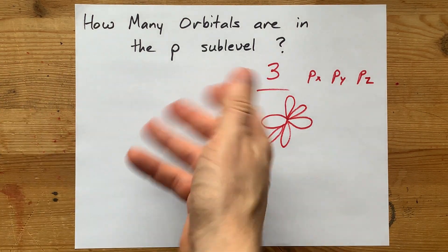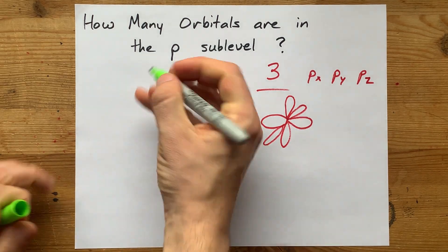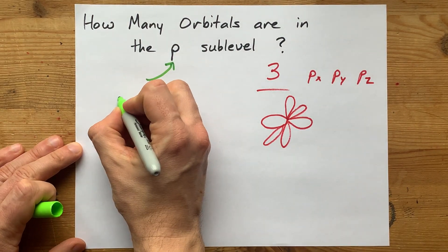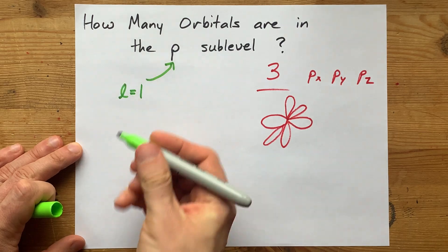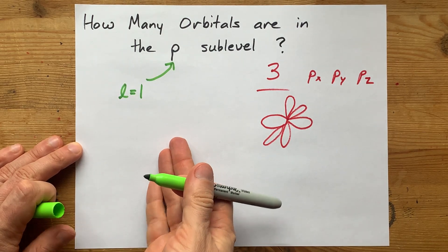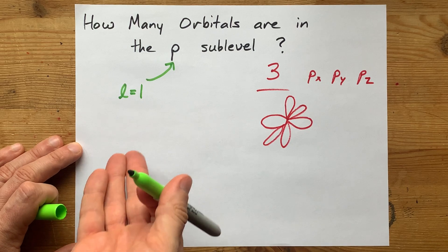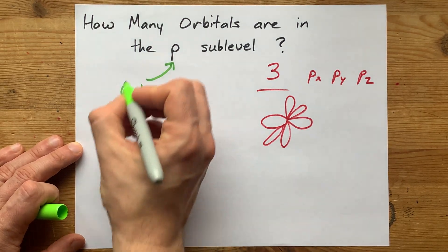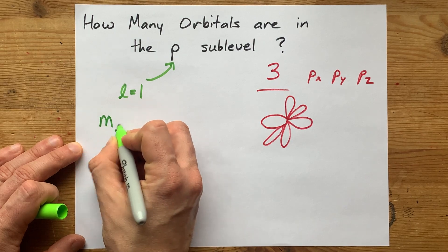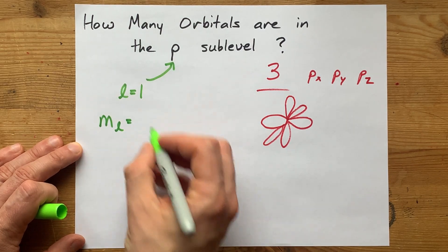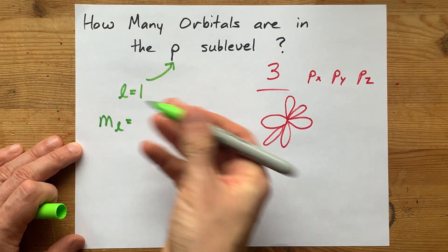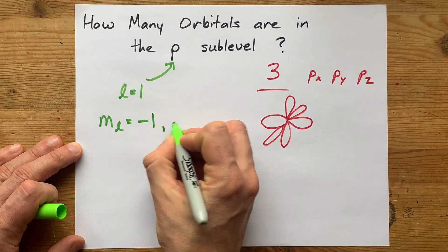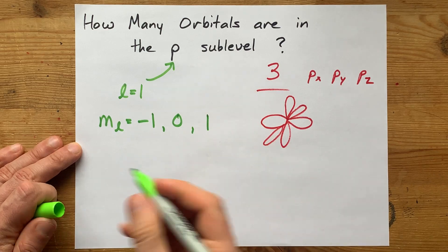But if you're looking for the why, my argument is that a p sub-level corresponds to l equals 1 in terms of quantum numbers. It's true no matter what n is. Then ml, the magnetic quantum number, can go from negative l — that's negative 1 — up to positive l, which is positive 1. So that's negative 1, and 0, and 1.